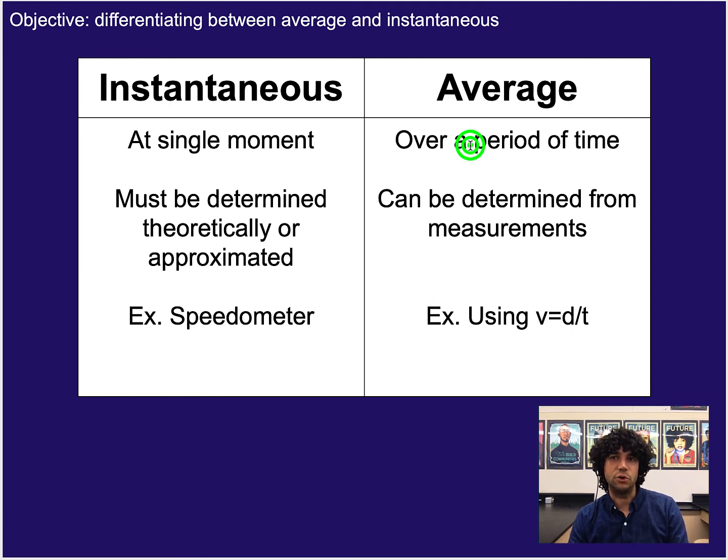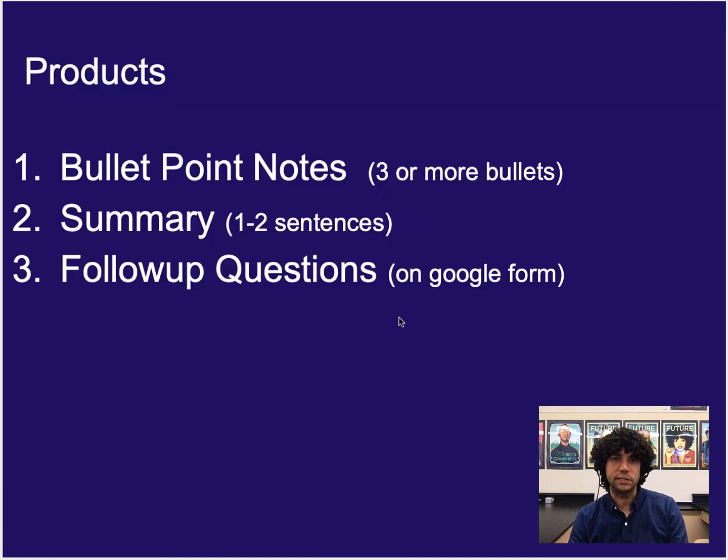Average is over a period of time or over some trip of some sorts. It can be determined from measurements pretty easily, usually. So if you're dividing by time, you've already got an average. And so that's it for instantaneous versus average as well as vector versus scalar.